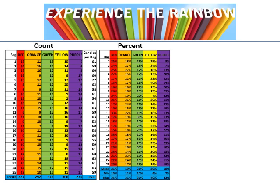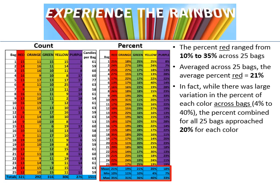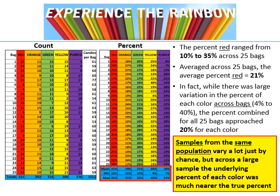Even though there's wide variability in each bag — from 10 to 35% reds — on average it approaches that 20% of each color per bag. There's a lot of sample-to-sample variability, but there is some overall population parameter that is 20% of each color. When you combine across multiple samples — that is, get a bigger and bigger sample — you get closer and closer to the actual factory percentage, which is the population 20%.